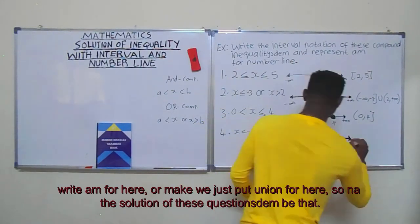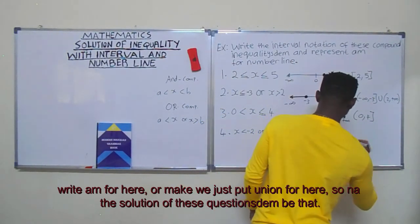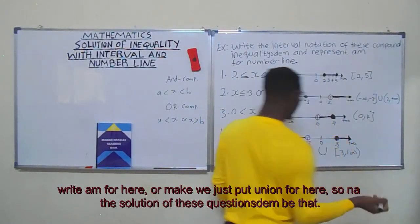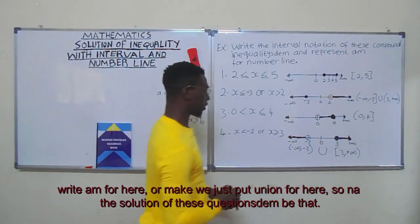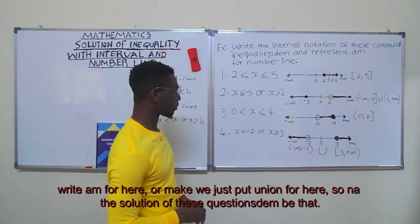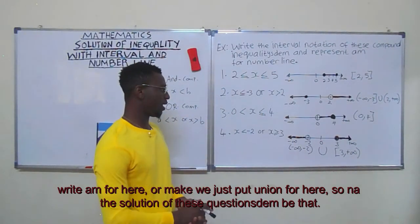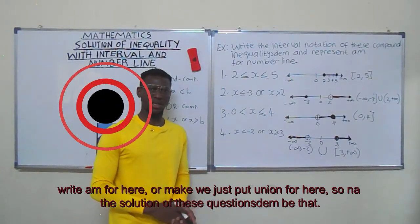We join these using union, and the complete interval notation for this question is (-∞, -2) ∪ [-3, +∞).